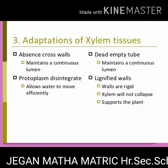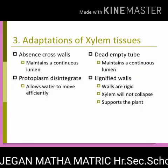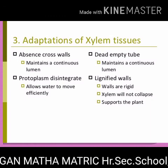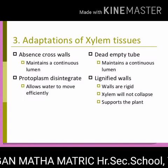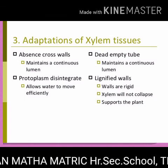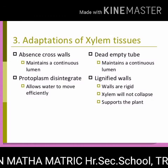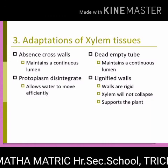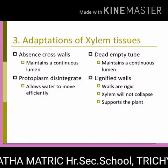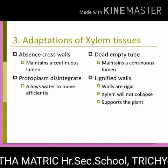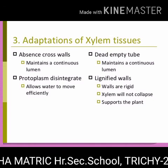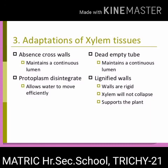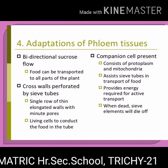Adaptations of xylem tissue: The absence of cross walls maintains a continuous lumen — lumen means a gap in the center of the cell. Dead, empty tubes maintain the continuity of the lumen. Protoplasts disintegrate, allowing water to move efficiently. Xylem has lignified, rigid walls so it will not collapse, thus supporting the plant.